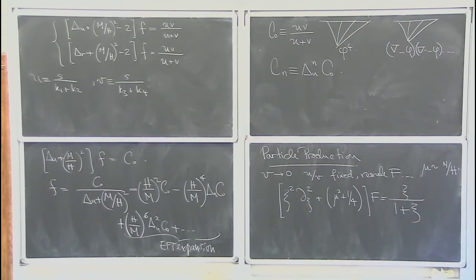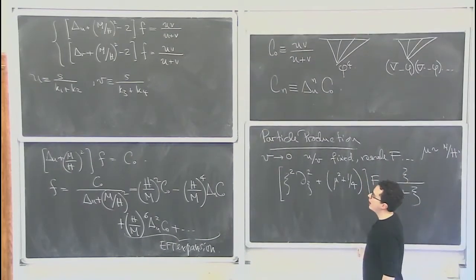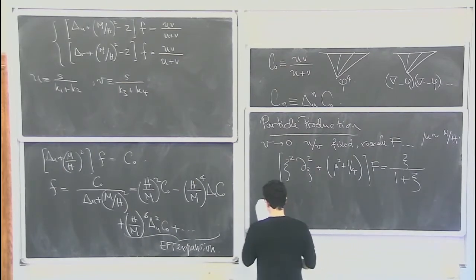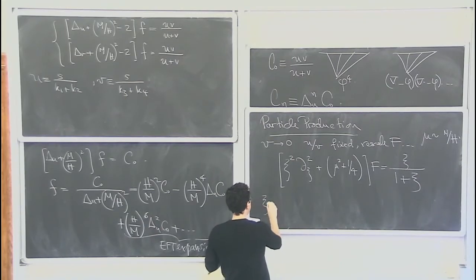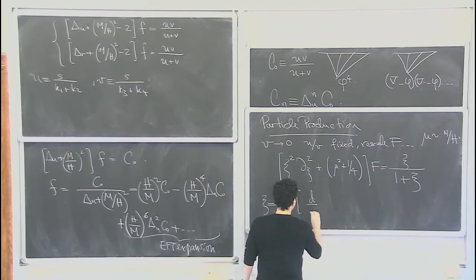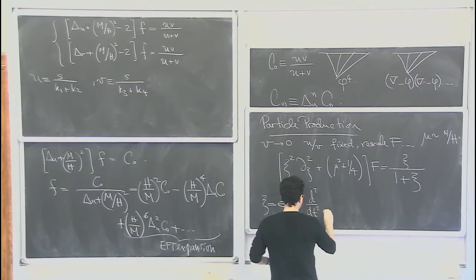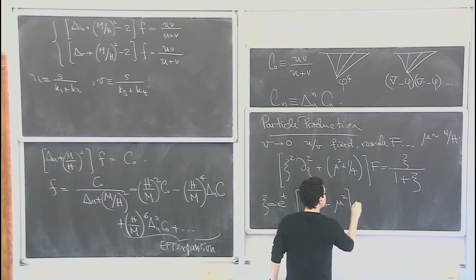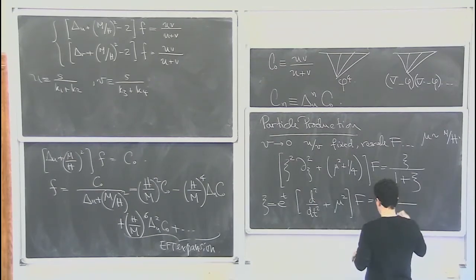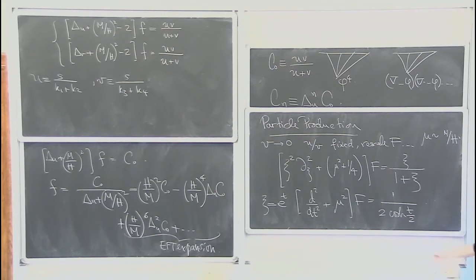You get some equation that looks like this: psi squared d over d psi squared plus mu squared plus one quarter, times F equals psi over one plus psi, where mu is morally related to M over H, and the one quarter is just for convenience. A more familiar form is that if you change variables to psi equals e to the t, then you get d squared over dt squared plus mu squared equals one over two cosh t over two. It's like a harmonic oscillator equation with a forcing term.